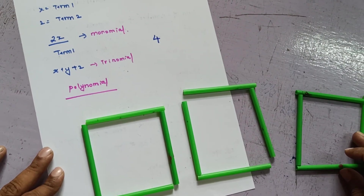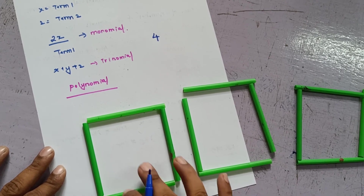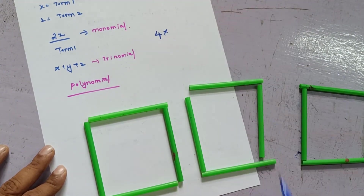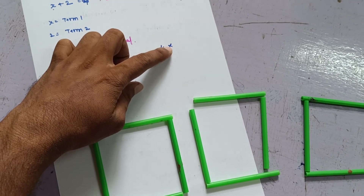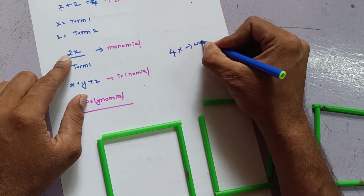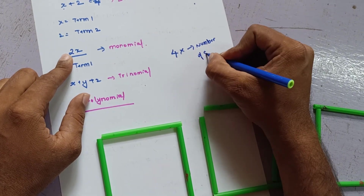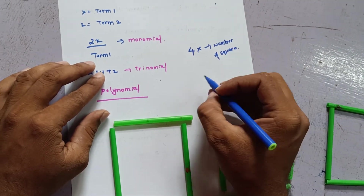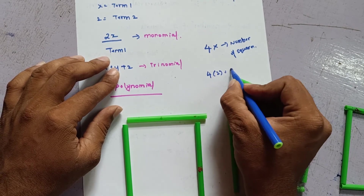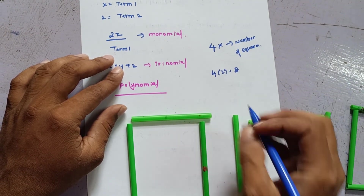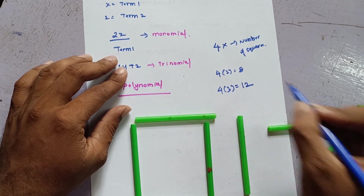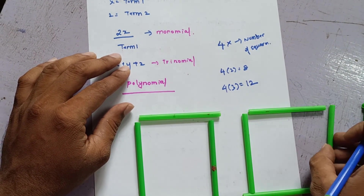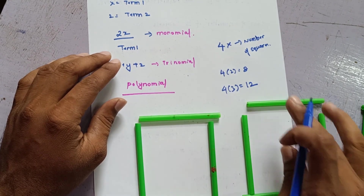The number of straws I use depends on the number of squares I want to make — this can vary. So X is the number of squares. If x equals 2, I use 8 straws; if x equals 3, I use 12 straws. I replace X with the number of squares I want to make — and this is another form of an algebraic equation being used.